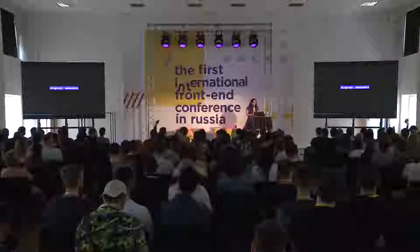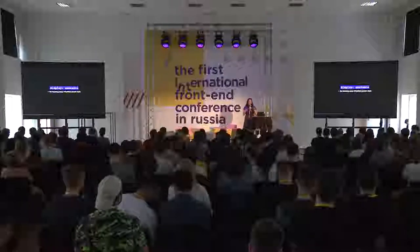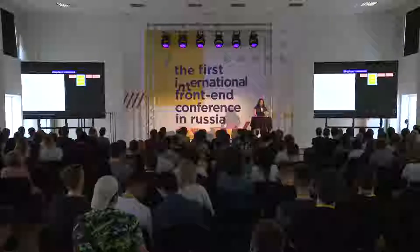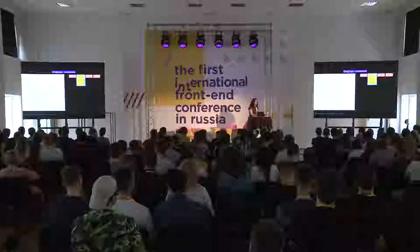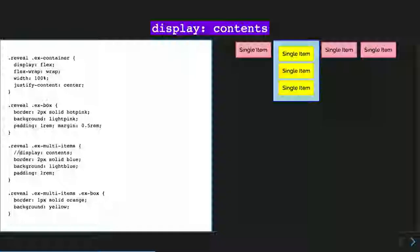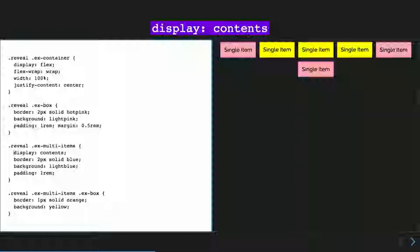Who here has heard of display:contents? Display contents is a way to avoid hacking away inherited parent styles. Anything applied to the layout geometry of that element is gone when you say display:contents — you just want the contents inside of it, getting pass-through parent styles. For example, with a flex container and a div called 'multi-items' with display:contents applied, all the styling — the border, the padding — goes away, allowing those elements to continue in the flow of the flexbox grid.